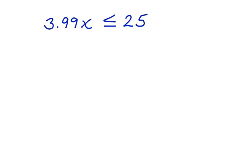Now, because $3.99 is an odd number to work with, we can actually round up the penny. And we can say 4x is less than or equal to $25.